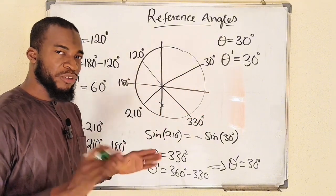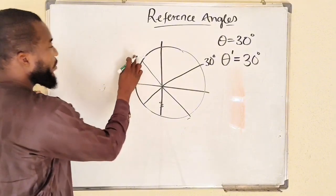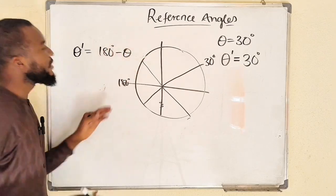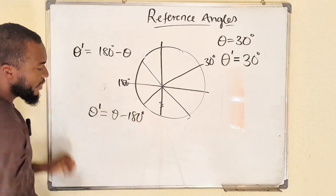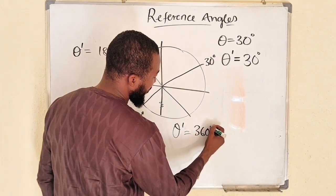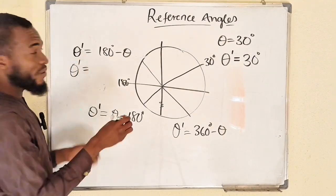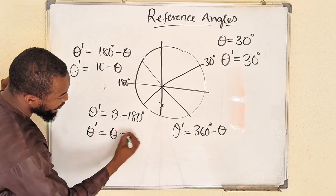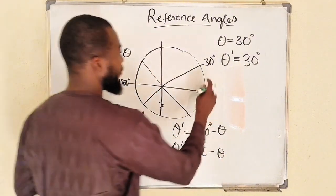In quadrant one, the angle does not change — it remains the same. Here are the four formulas: in quadrant one, the reference angle equals the angle; in quadrant two, it equals 180 degrees minus the angle; in quadrant three, it equals the angle minus 180 degrees; in quadrant four, it equals 360 degrees minus the angle. In radians: quadrant two gives pi minus the angle, quadrant three gives the angle minus pi, and quadrant four gives 2 pi minus the angle.